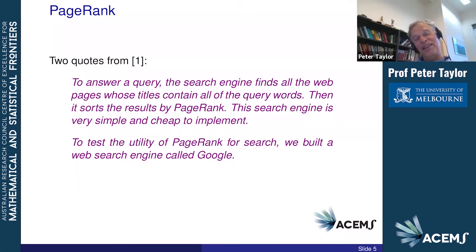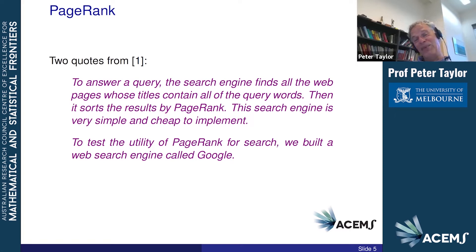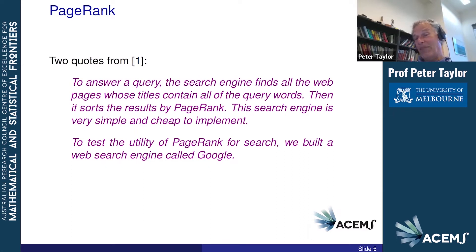The second quote I really like: 'To test the utility of PageRank for search, we built a web search engine called Google.' It wasn't like they assumed everyone knew what Google was — they had to introduce it, and this was in 1998–1999. The world hadn't heard of Google, and now we use Google as a verb. Before that, there were plenty of other search engines — Yahoo, Lycos, a bunch of other things — and we didn't really have the search capability we've got now.